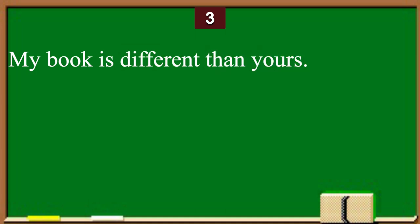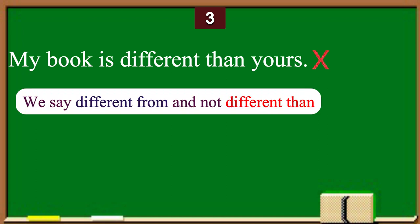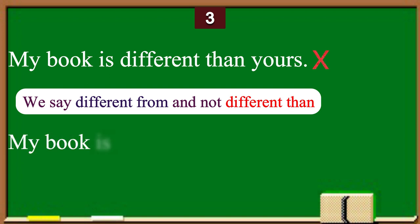Number 3 is: my book is different than yours — this is incorrect. The word different is an adjective, but it is not a comparative adjective, so we do not use than. We say different from. Please repeat after me: My book is different from yours.